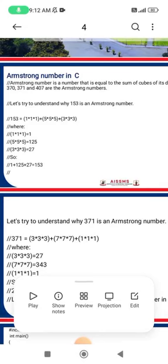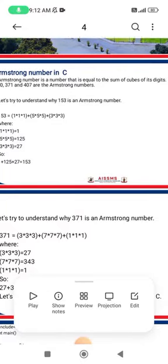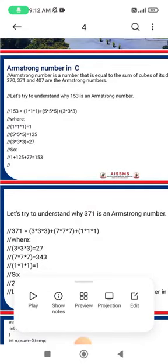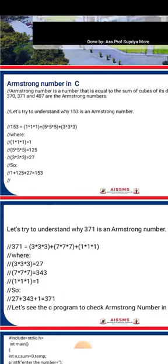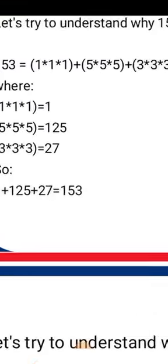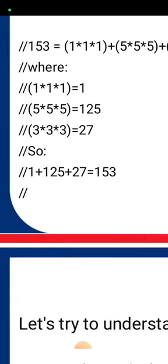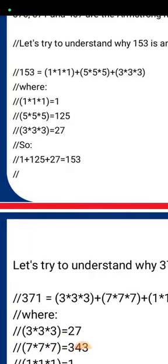To identify whether a number is an Armstrong number, we check its digits. For 153: 1 cubed plus 5 cubed plus 3 cubed equals 1×1×1 + 5×5×5 + 3×3×3 = 1 + 125 + 27 = 153. Since the sum of cubes equals the original number, 153 is an Armstrong number.